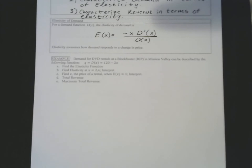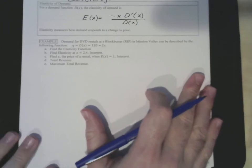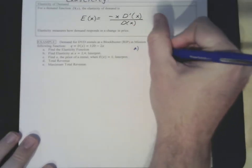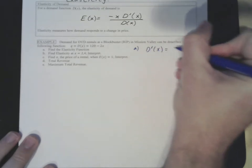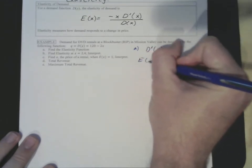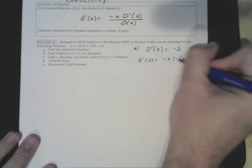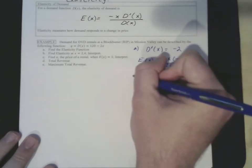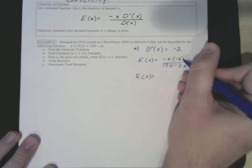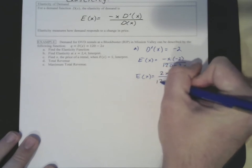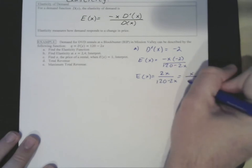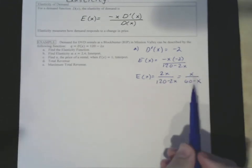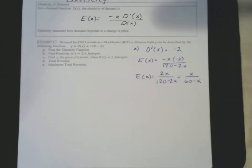Flipping back to the example: demand for DVD rentals at Blockbuster — rest in peace, Blockbuster — in Mission Valley can be described by q equals 120 minus 2x. First, we find our elasticity function. d prime of x is negative 2, so e(x) equals negative x times negative 2, over 120 minus 2x. Simplifying, e(x) equals 2x over 120 minus 2x, or x over 60 minus x. You'll want to simplify your elasticity functions as much as possible.